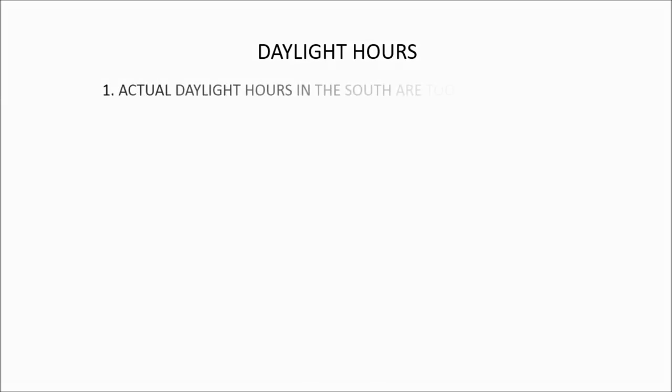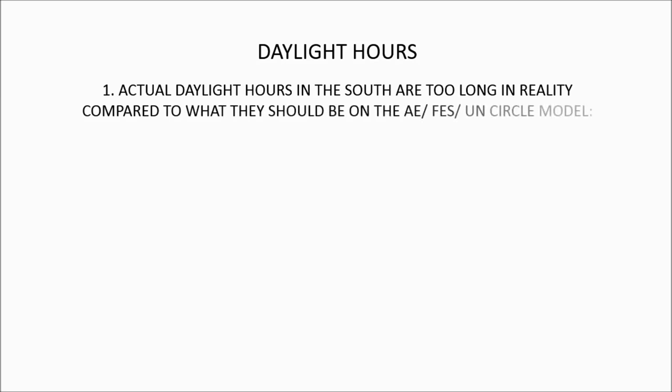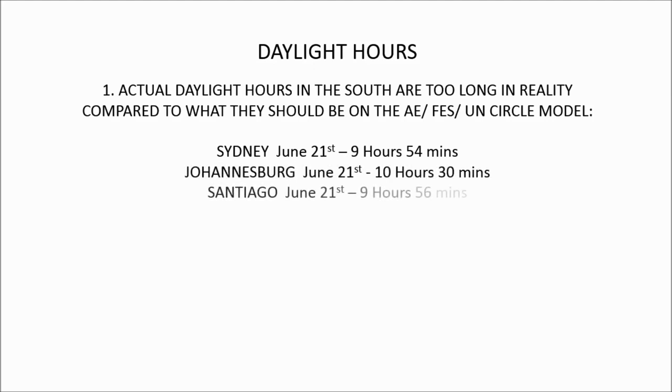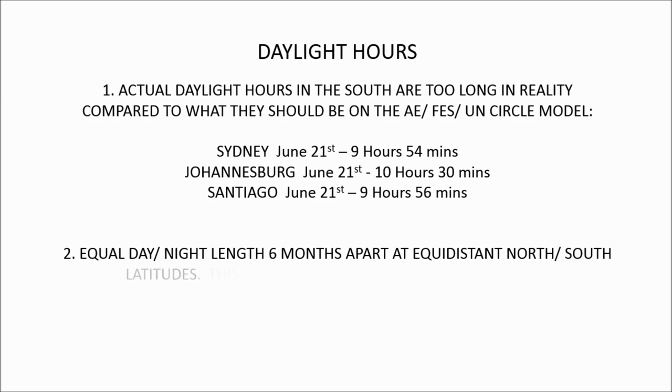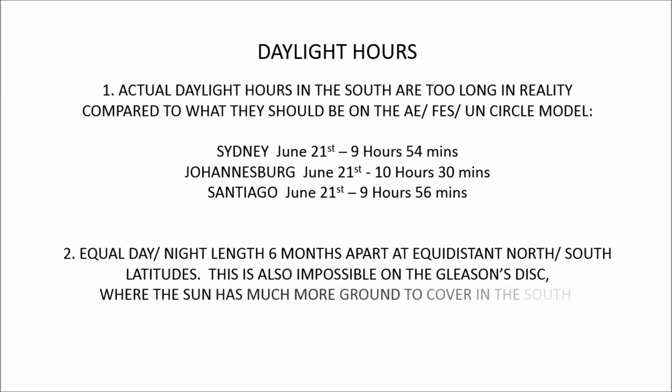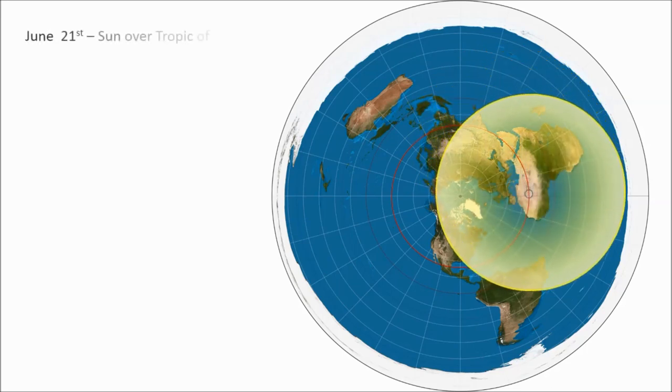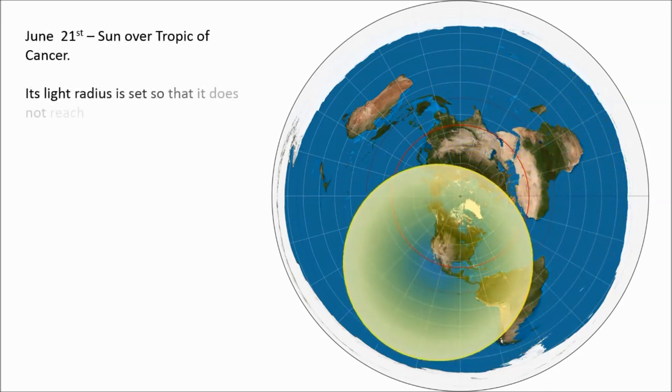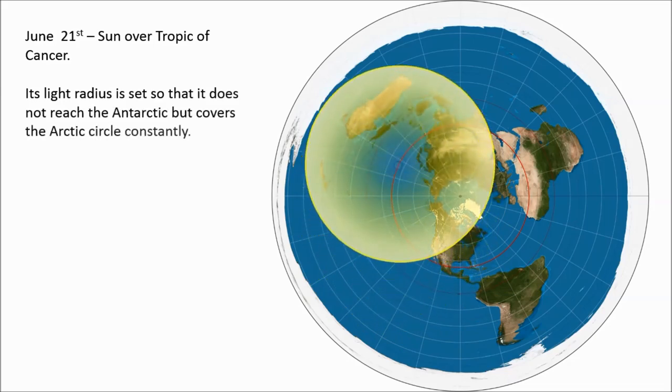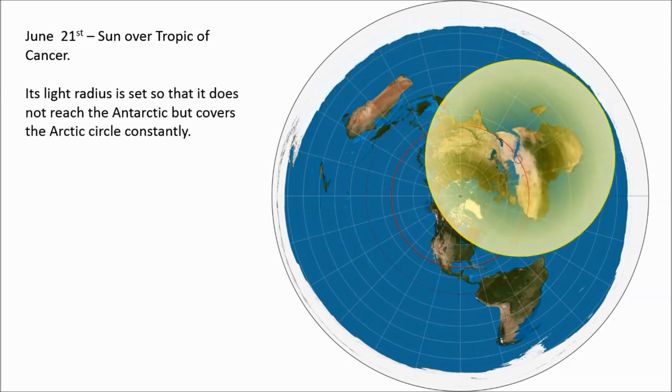But it's not just scripture. There are plenty of observable proofs that prove the circle model is a wrong model of flat earth. There's no way for the model to produce the daylight hours that are real. There will be millions of people living in these southern cities. We can show examples of that with animations and show how it's impossible to reflect reality. You set the sun's reach so it can't reach Antarctica but it's just giving the Arctic 24-hour light, as we know it does in the June summer.